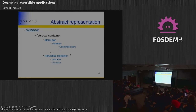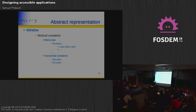From a screen reader perspective, you have the main window which may have a vertical container, then you have a menu bar with menu items, then a horizontal container with the text area, an OK button, and so on. The screen reader has access to the full tree of widgets, so it can work quite well.